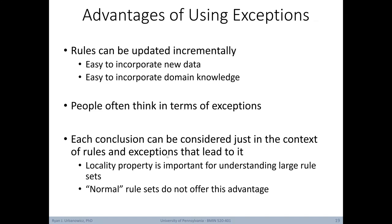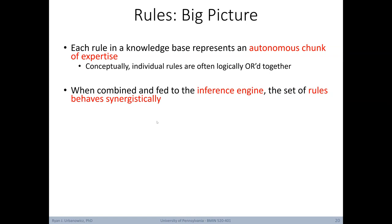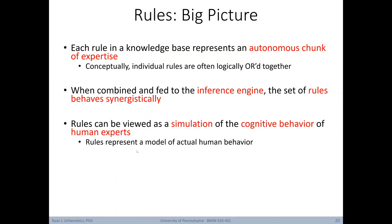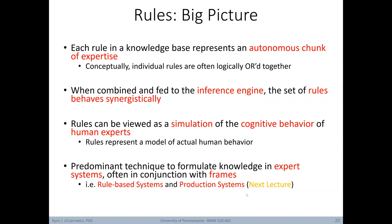At the big picture level, each rule in a knowledge base represents an autonomous chunk of expertise, with individual rules conceptually linked through OR expressions. When combined and fed into an inference engine, the set of rules behaves synergistically — being utilized collectively to make decisions and choose new actions. The use of rules simulates the cognitive behavior of human experts, making them a predominantly used technique to formulate knowledge in expert systems, often used in conjunction with frames.